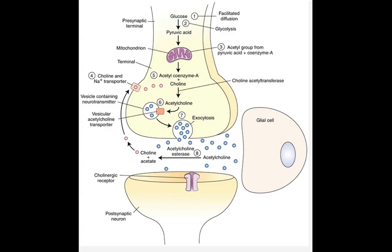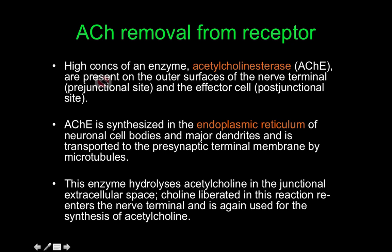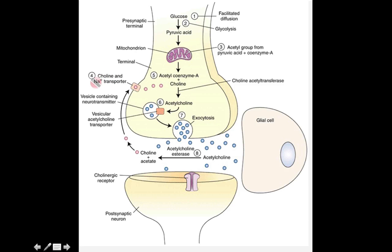This diagram adds more detail: the choline in the synaptic cleft goes through a choline and sodium ion transporter back into the presynaptic cell, where it combines with acetyl-CoA to form acetylcholine again. The diagram also shows glucose going to pyruvate via glycolysis in the cytoplasm, then entering the mitochondria via the link reaction to form acetyl-CoA.